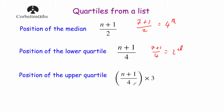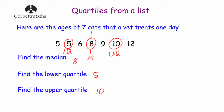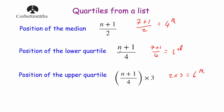To find the position of our upper quartile, we take our position of our lower quartile and multiply it by three. So we take the second value and multiply by three, giving us the sixth value. Looking at our list of data, our sixth value was indeed the upper quartile. So at GCSE level, to find the position of the lower quartile, add one and divide by four; then multiply that by three to find the position of the upper quartile.